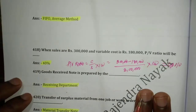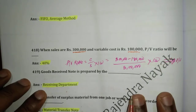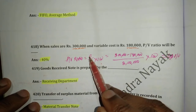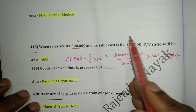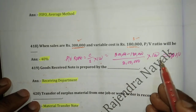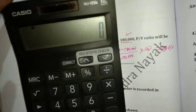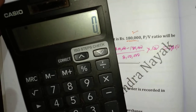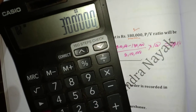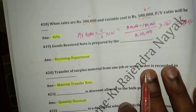Question number 418: When sales are Rs. 3 lakh and variable cost is Rs. 1.80 lakh, the profit-volume (PV) ratio is calculated as contribution divided by sales × 100. Contribution = 3 lakh − 1.80 lakh = Rs. 1.20 lakh. PV ratio = 1.20/3.00 × 100 = 40%.